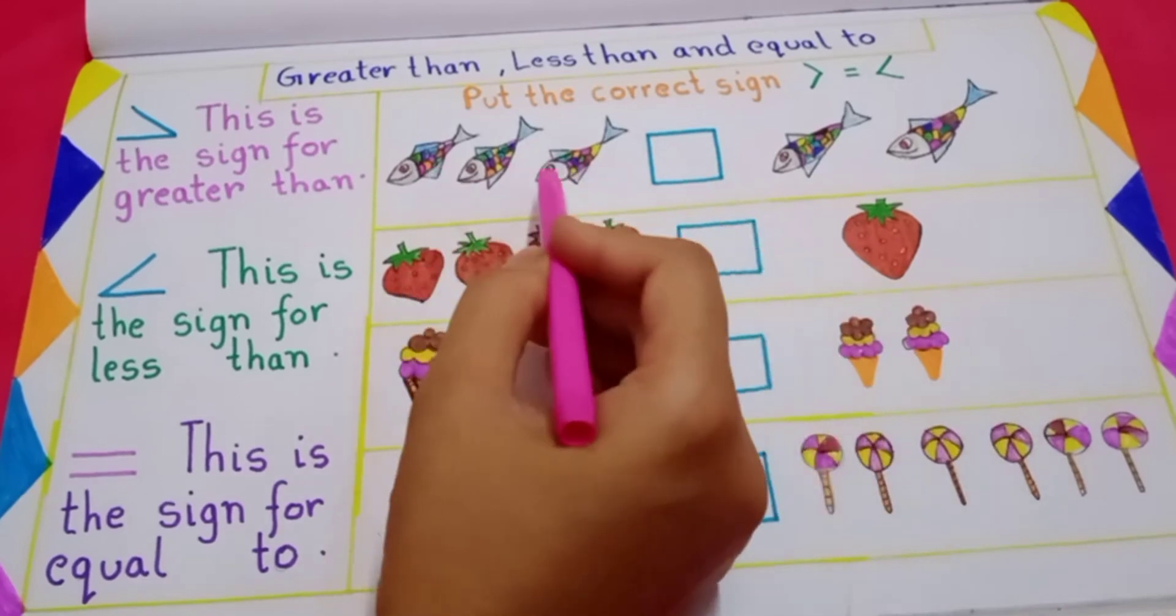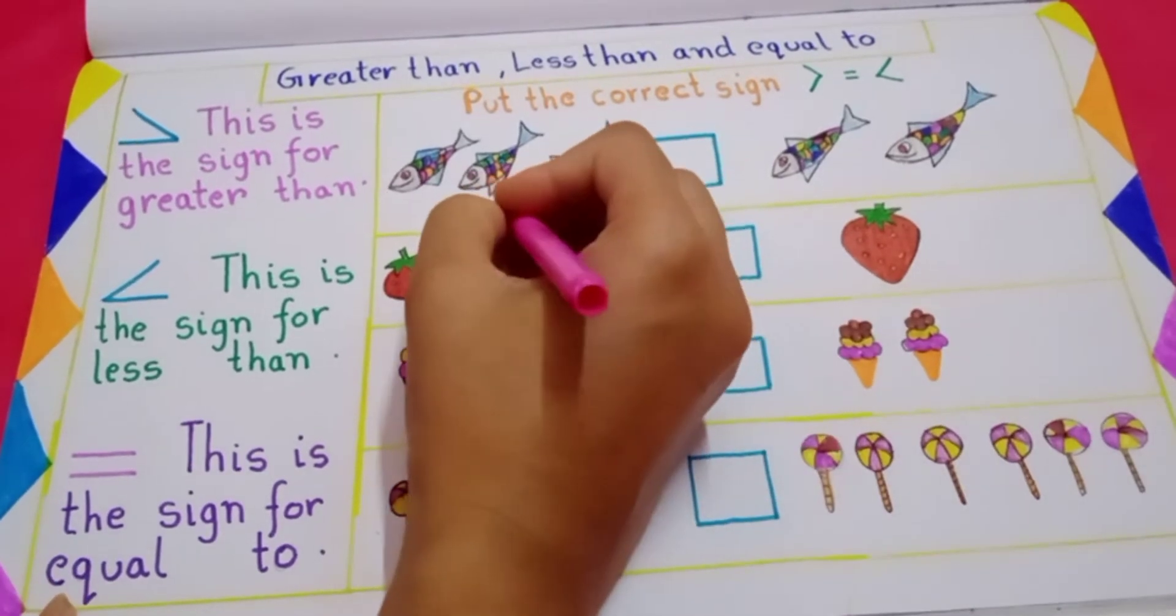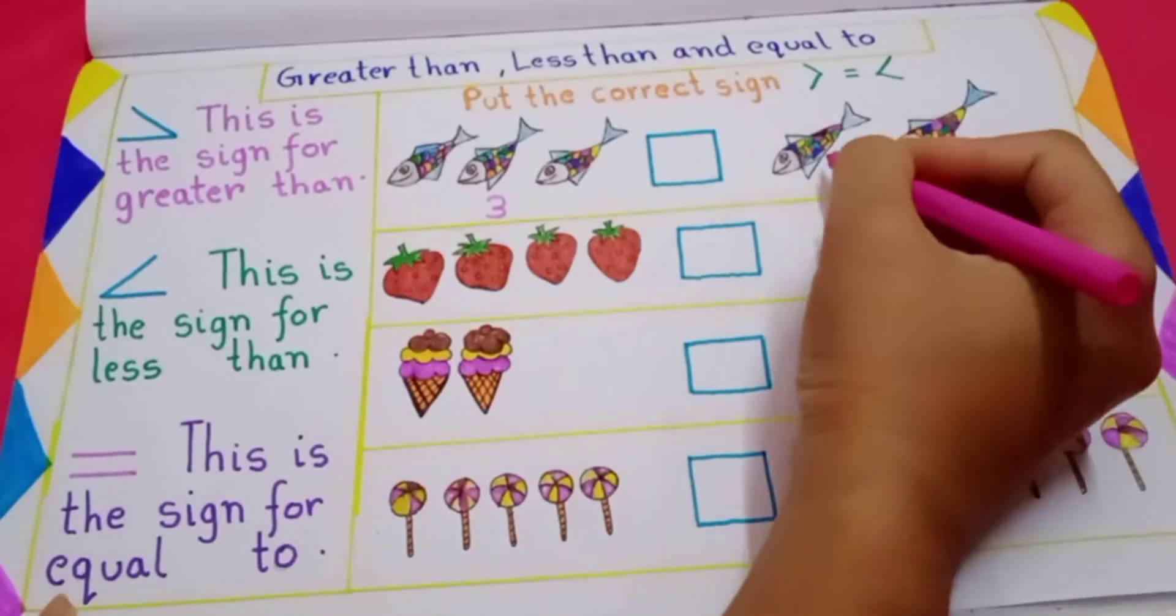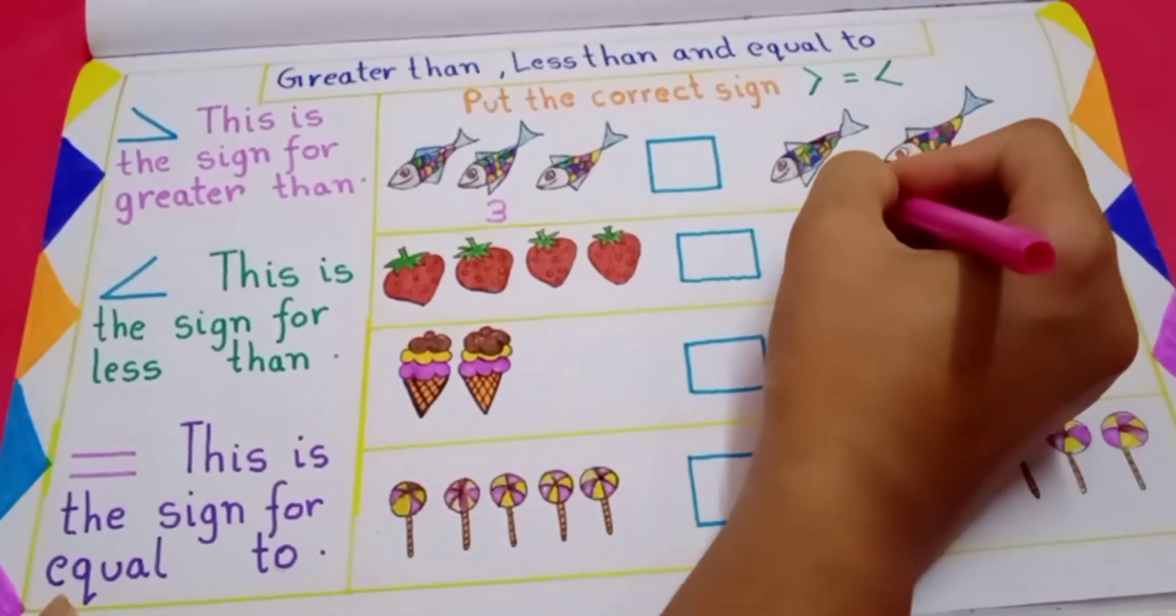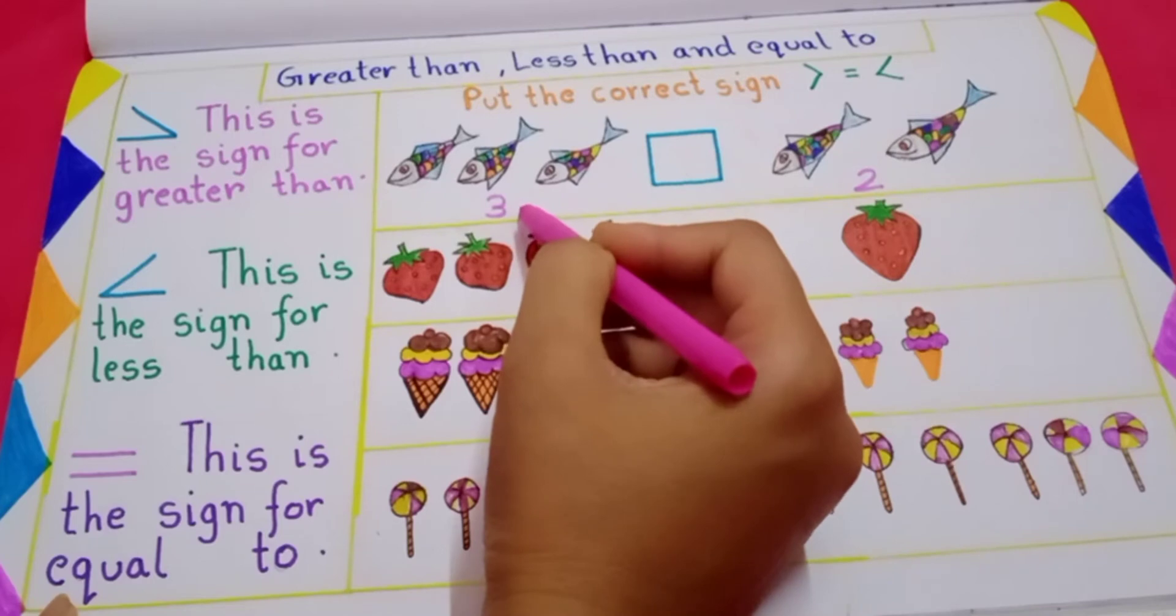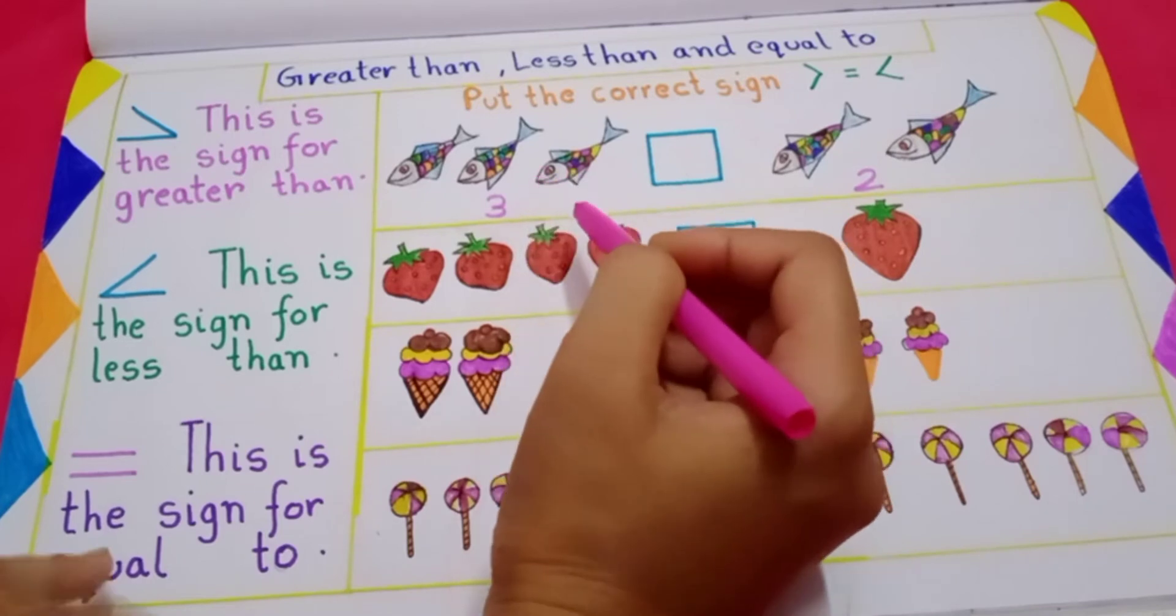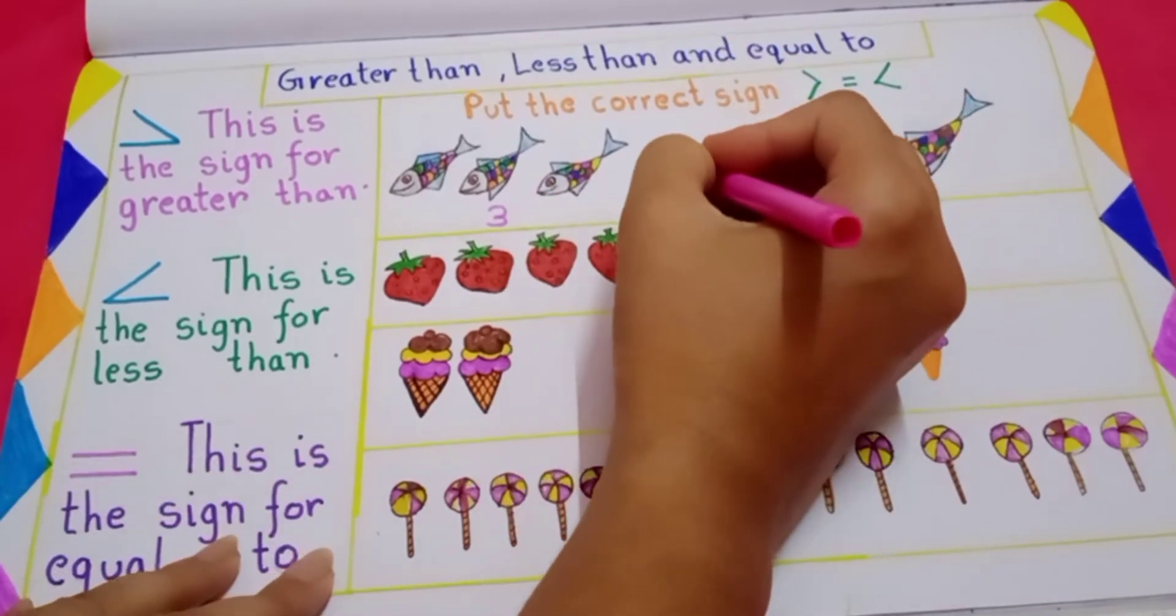Now here you can see 1, 2, 3, 3 fishes. And this side, 1, 2, 2 fishes. Now which one is more? Yes, 3 fishes are more, right. So put greater than sign.